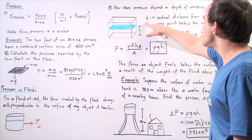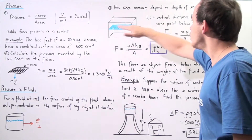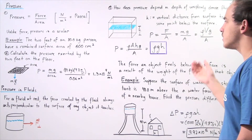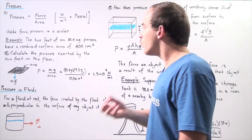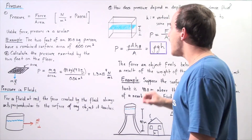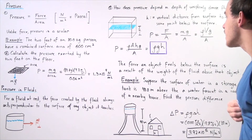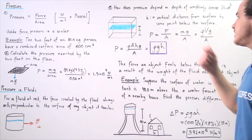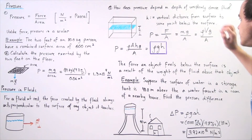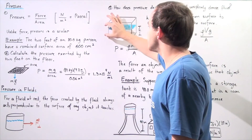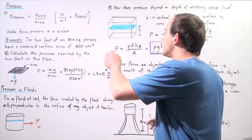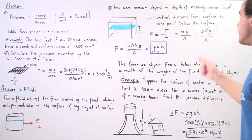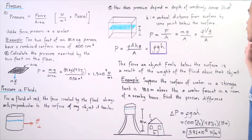Let h be the vertical distance from the surface of the fluid to some point below the surface — let's choose the point at the bottom of our container. We want to determine the pressure an object would feel at the bottom of the container, a vertical distance h from the surface. From our equation, pressure equals force divided by area, where the force is m times g and m is the mass of the entire fluid. The mass of the fluid equals the density of the fluid multiplied by its volume, multiplied by g — this entire numerator is the force.